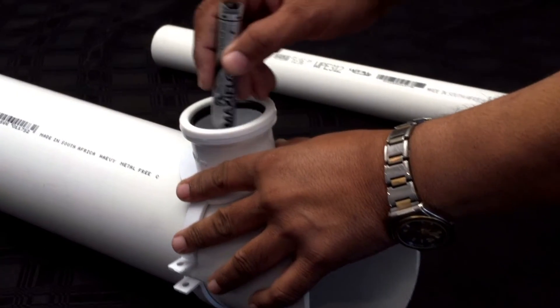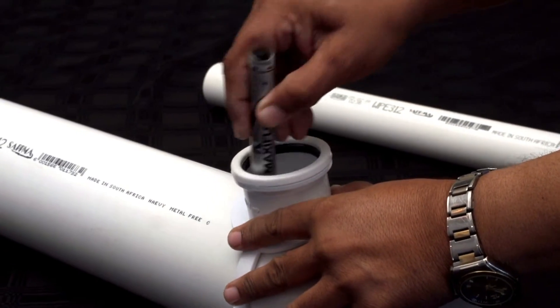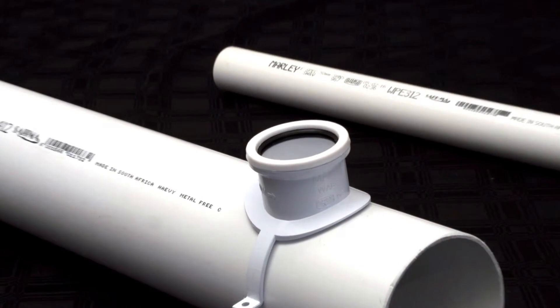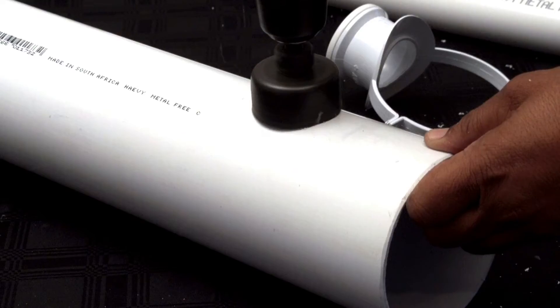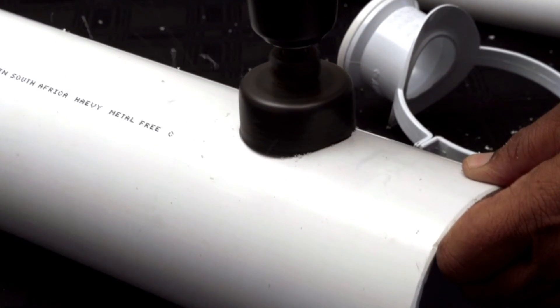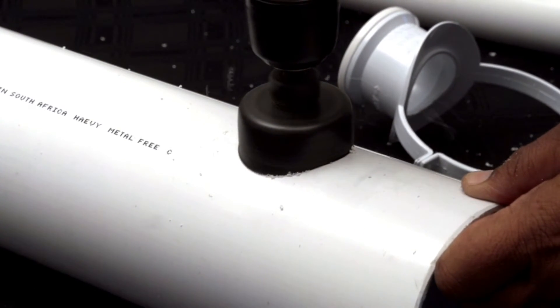Align the saddle into the correct position and mark the saddle flange outline and the required hole in the main line. Remove the saddle and drill the hole in the main line as marked, using a 50mm hole saw.